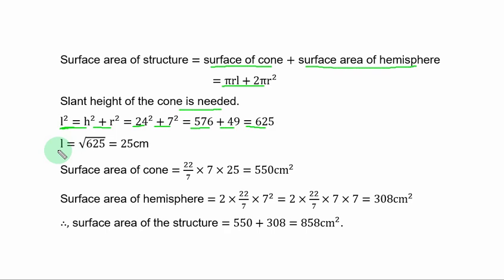To get L, the slant height, take the root of both sides and L is 25 centimeters. So, surface area of cone is 22 over 7 for pi times 7 for radius times 25 slant height. That is 550 square centimeters.